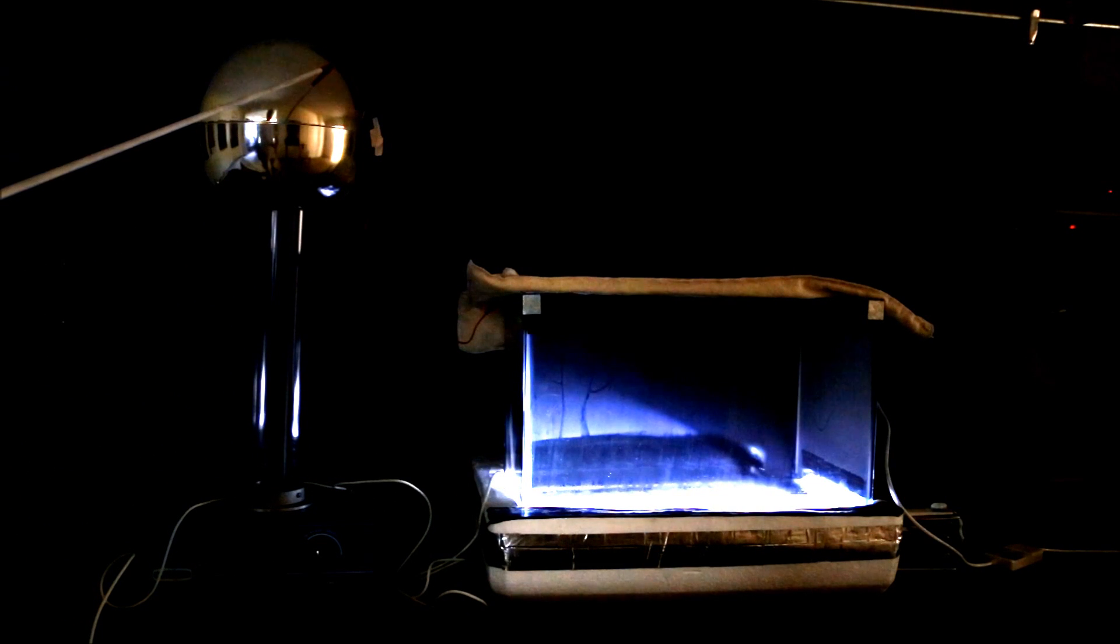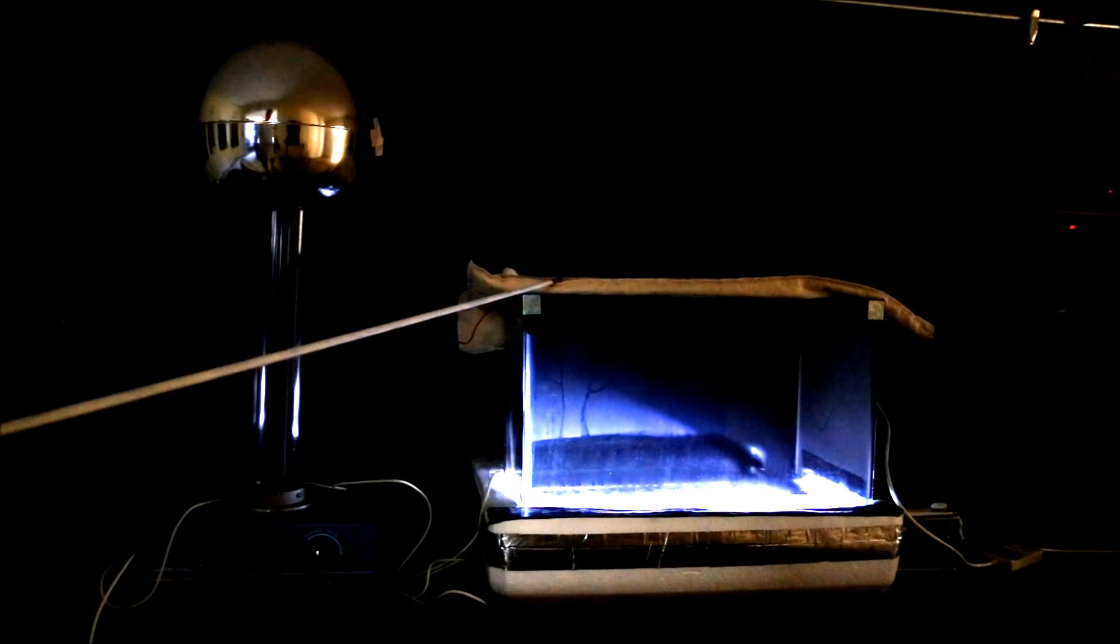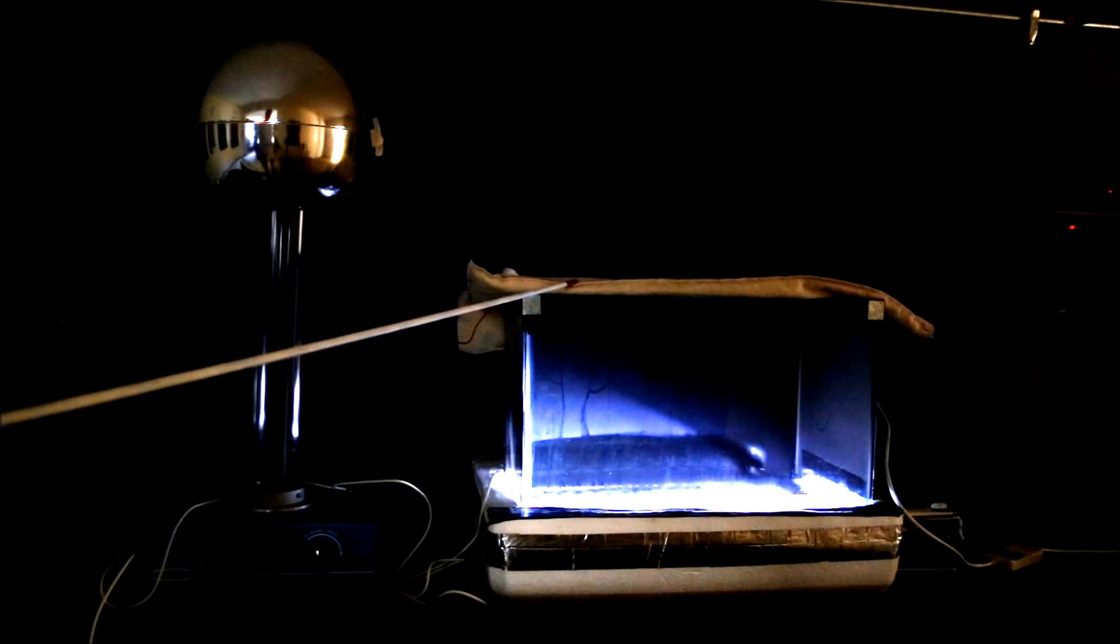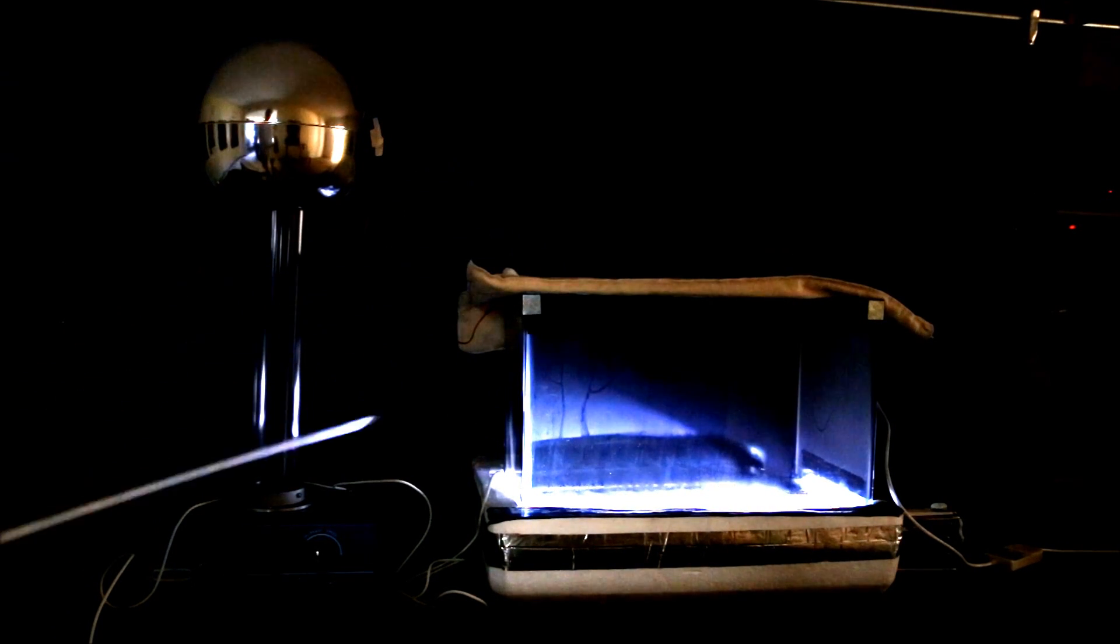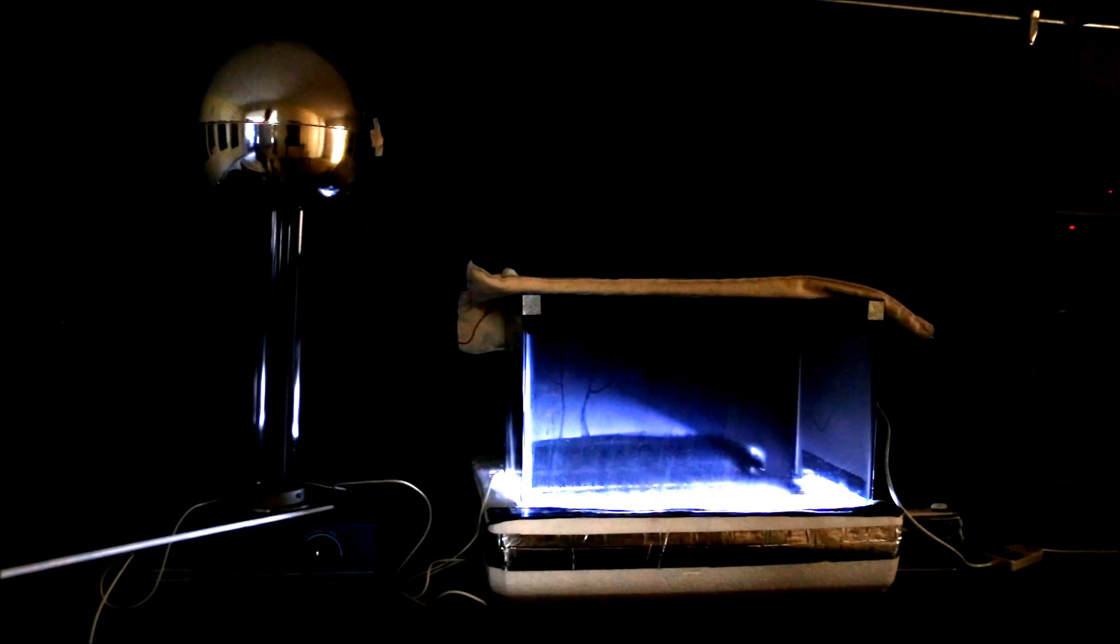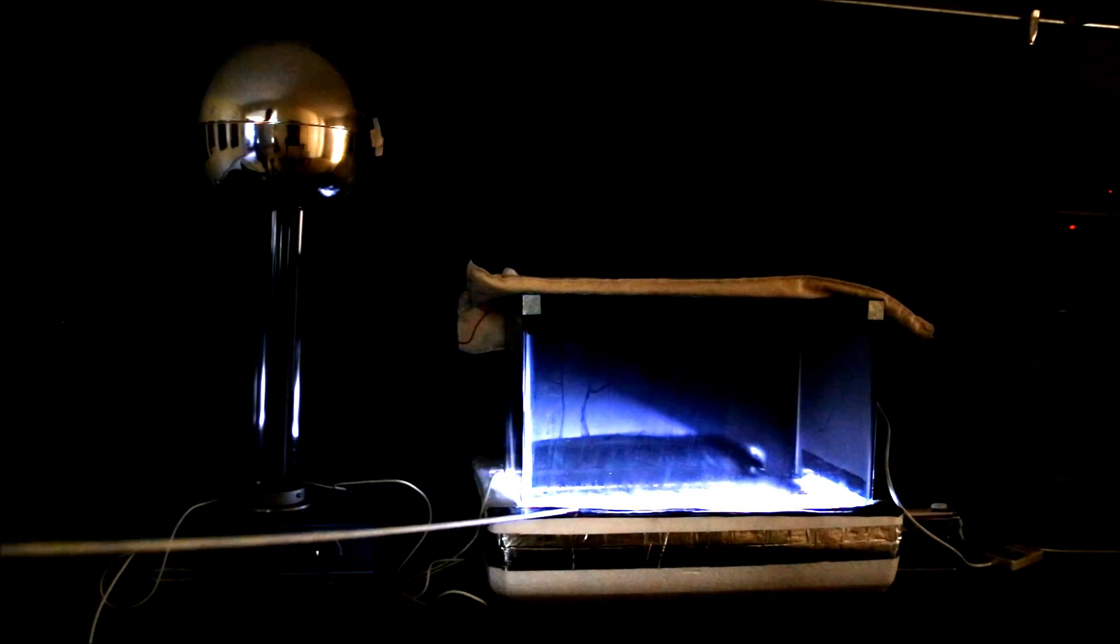I've attached a Van de Graaff generator, this is the negative electrode, to a grid just underneath the glass plate at the top of my cloud chamber. The ground or base of the Van de Graaff generator is connected to the aluminum base inside the cloud chamber.